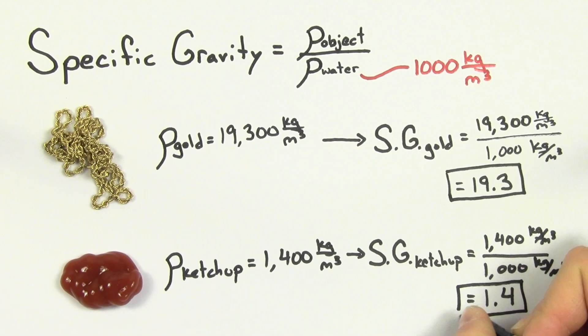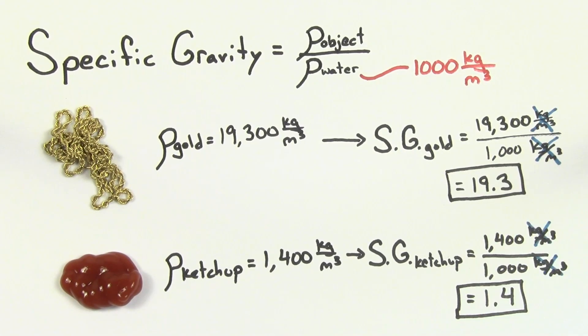Note, there's no units for specific gravity, because it's the ratio of one density to another density, so the units cancel each other out.